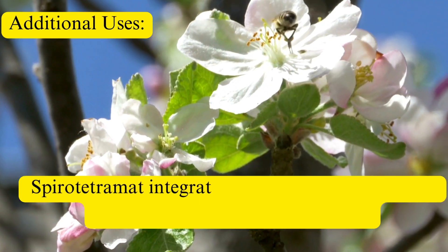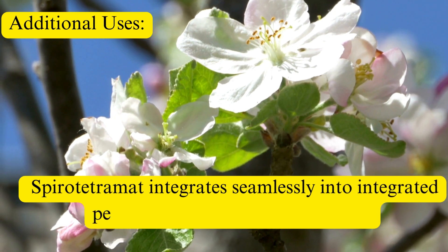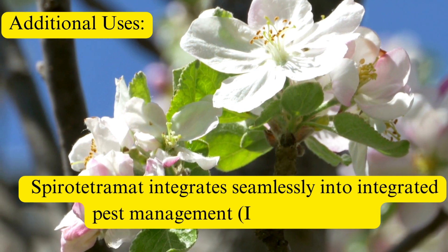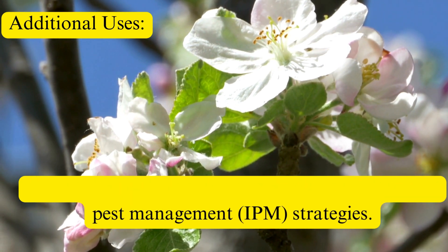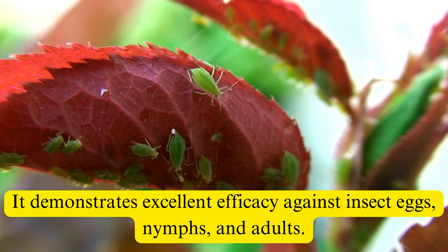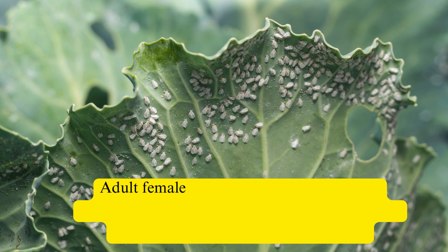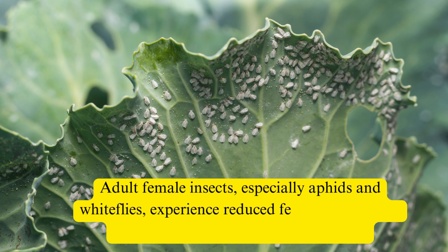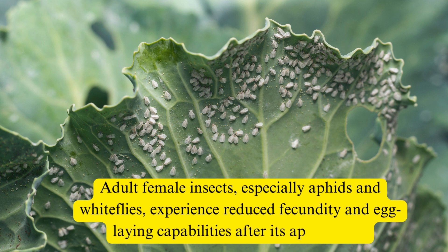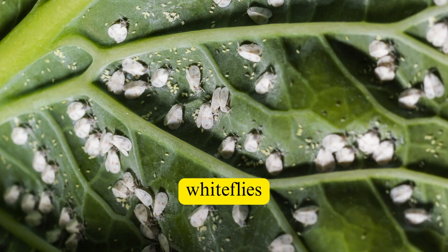Spiro-Tetramat integrates seamlessly into integrated pest management (IPM) strategies. It demonstrates excellent efficacy against insect eggs, nymphs, and adults. Adult female insects, especially aphids and whiteflies, experience reduced fecundity and egg-laying capabilities after its application.